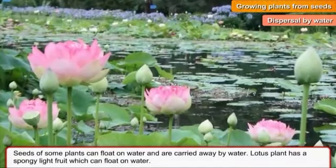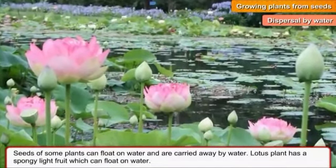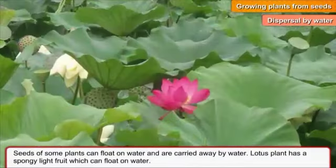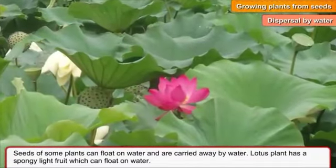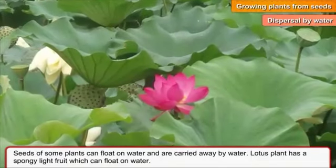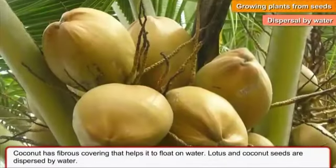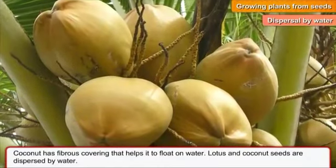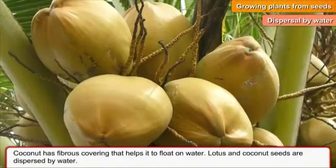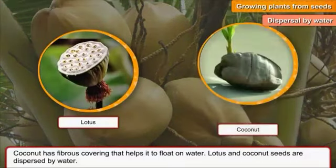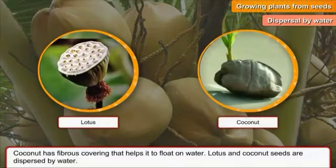Dispersal by water: seeds of some plants can float on water and are carried away by water. The lotus plant has a spongy, light fruit which can float on water. Coconut has a fibrous covering that helps it float on water. Lotus and coconut seeds are dispersed by water.